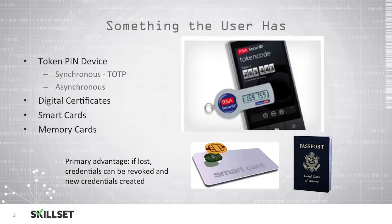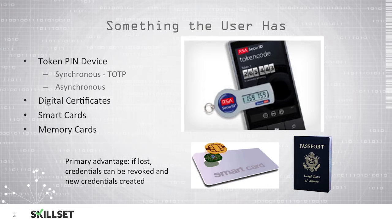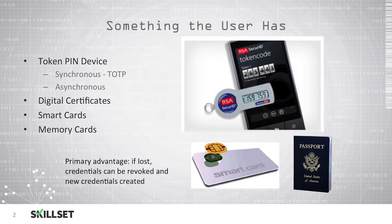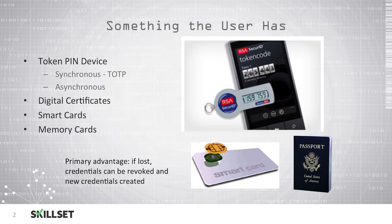There are a few different types of devices that can work with something a user has authentication. The first is a token PIN device, and there are two types: synchronous and asynchronous. Synchronous token devices are based on the Time-based One-Time Password protocol, or TOTP. The user could also use a digital certificate, a smart card, or a memory card.